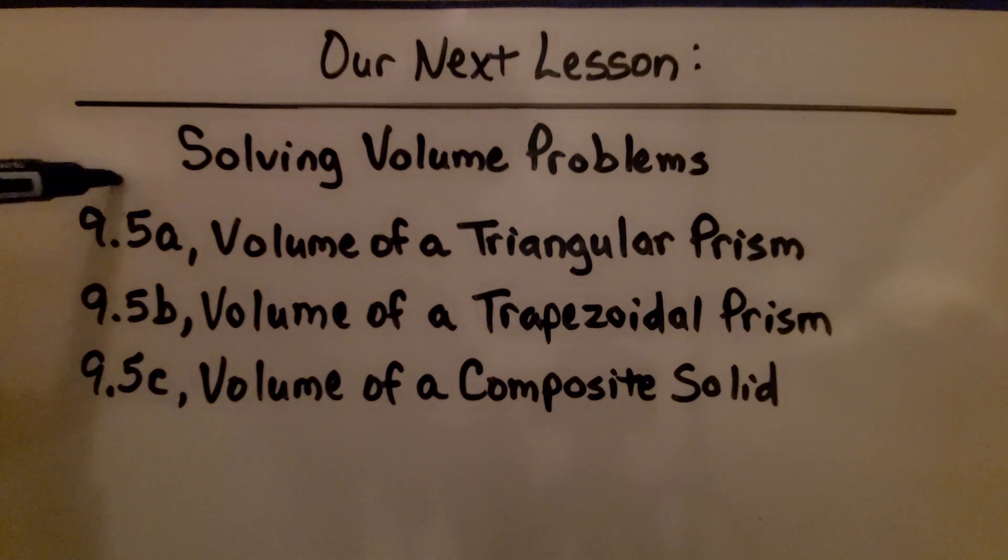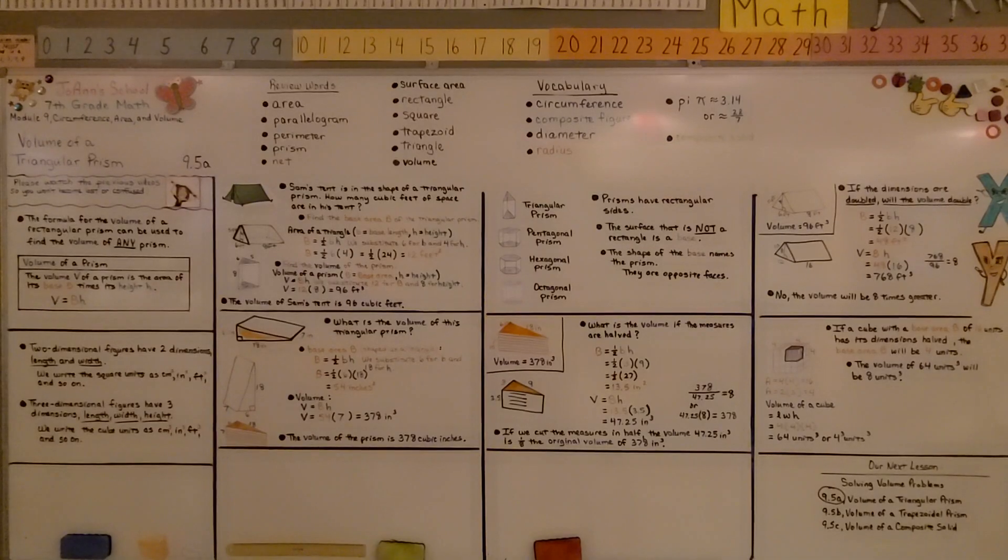We finished the first part of 9.5. We're going to move on to 9.5b and do the volume of a trapezoidal prism. If anything was confusing, just rewind the video and watch that part again. I hope I made it clear. Have a great day and join me for the next part of the lesson.